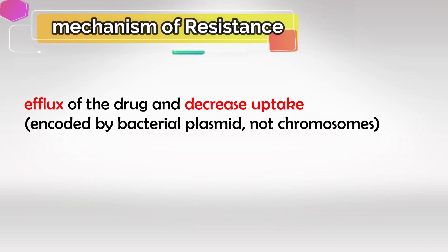The mechanism of resistance is plasmid-coded efflux of the drug and decreased intake. Remember, the bacteria has its DNA in two parts: the chromosomes and the plasmid. Chromosomal DNA usually regulates bacterial growth and metabolism, while plasmid DNA regulates drug resistance.